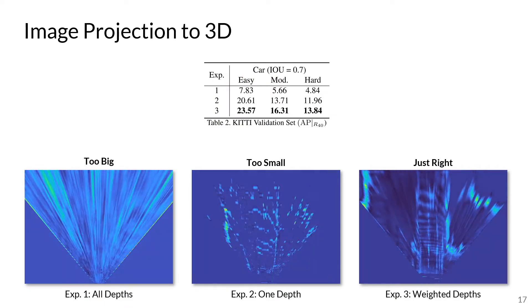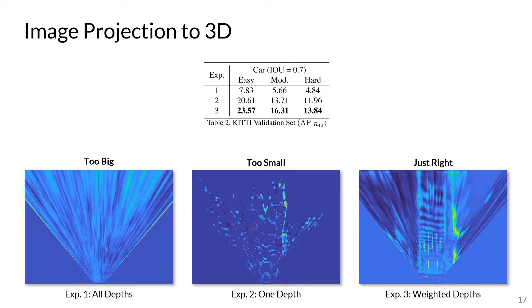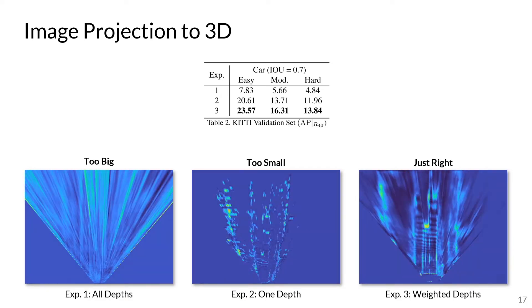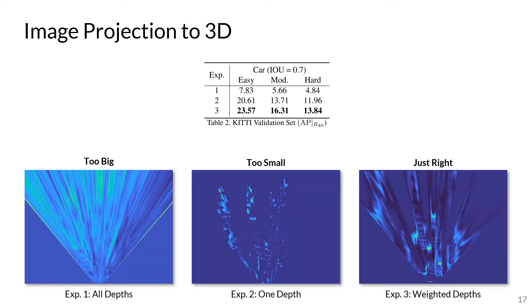We also compare the Goldilocks approaches for image projection into 3D. We validate that our just-right approach achieves the highest performance, as it places image information in the correct locations, while encoding depth estimation uncertainty.